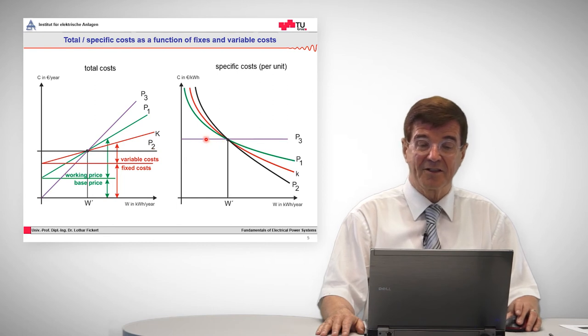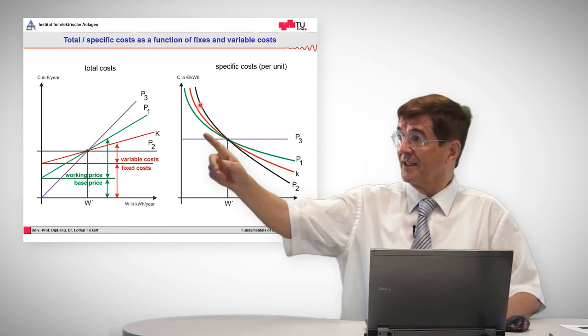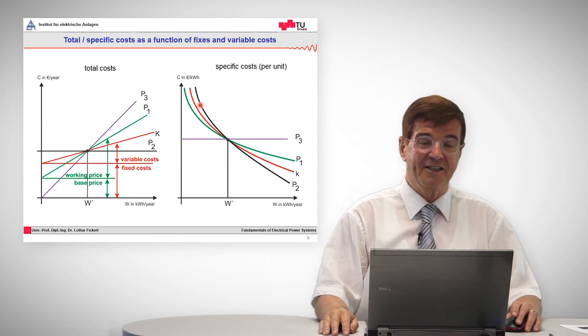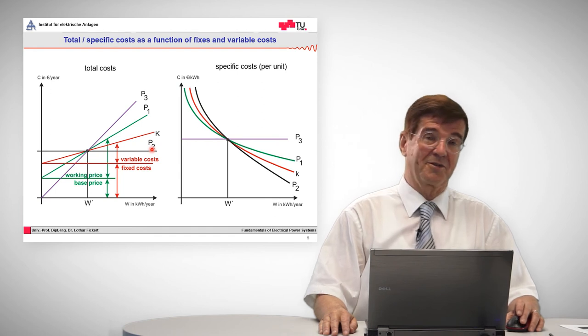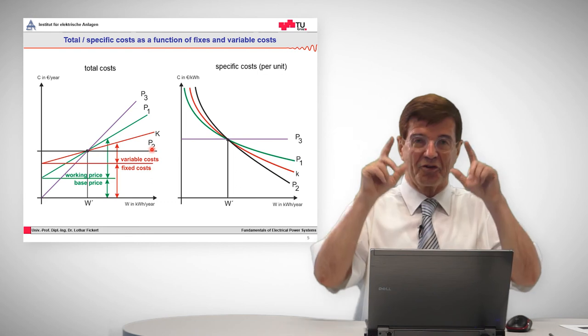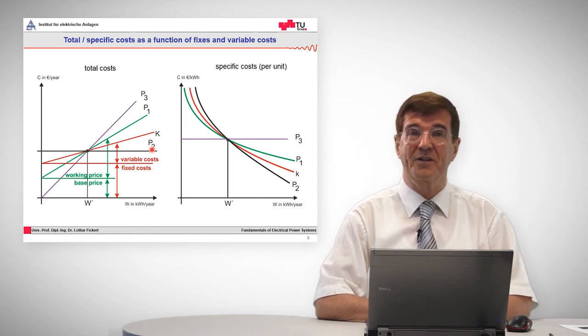But when it comes to low output of energy, then suddenly this turns over, the picture turns over, and we have here the highest cost per delivered energy for that power plant that had the highest fixed cost and no variable cost. So this is the paradox that though you have no cost for your fuel, as people call it, you have nevertheless the highest cost per kilowatt hour.